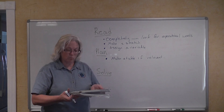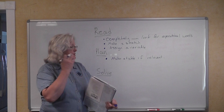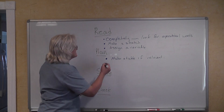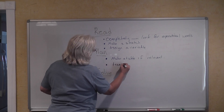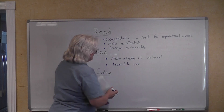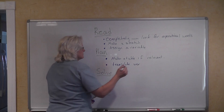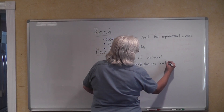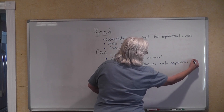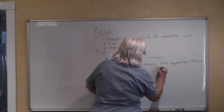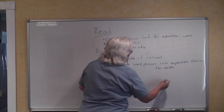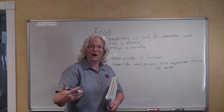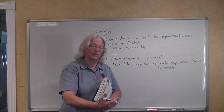The plan also says: translate word phrases into expressions using the variable, and express each unknown and other key quantities in terms of the variable. For example, if x is the width of the garden and the length is 5 feet longer than the width, then x plus 5 is an expression that represents the length of that rectangular garden.